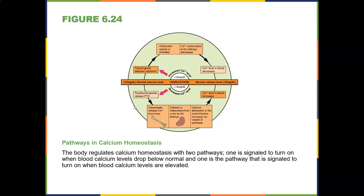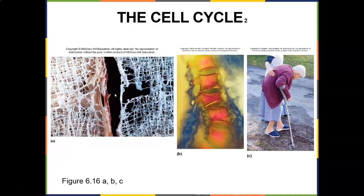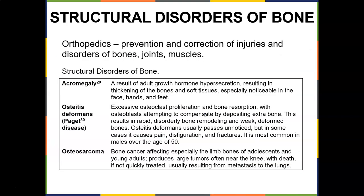Here's a chart showing the calcium homeostasis cycle and an image of extreme kyphosis — the dowager's hump — in an elderly woman. Now let's look at some structural bone disorders. Orthopedics involves the prevention and correction of injuries and disorders of bones, joints, and muscles.